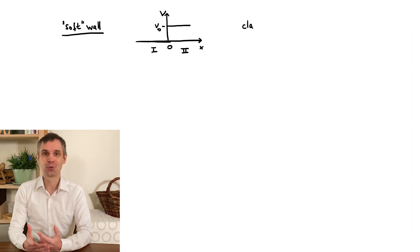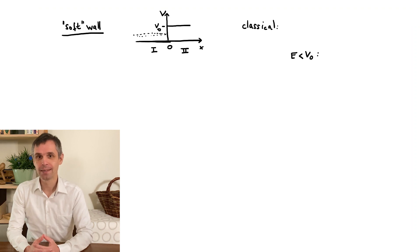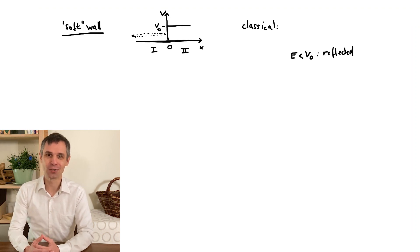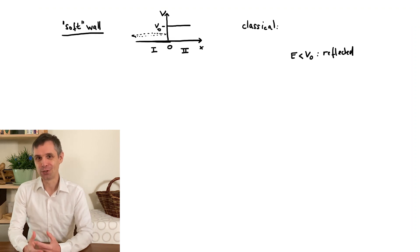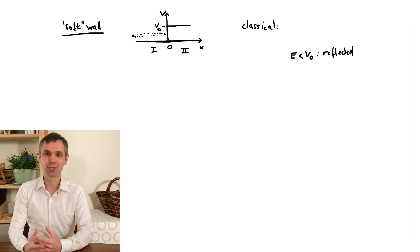Classically, we now have two cases. If the energy is still not enough to overcome this potential energy, the particle will always be reflected. It then really does not matter that the wall has a finite potential energy, it could just as well be infinite. It is actually a little paradoxical that a classical particle does not care how large the potential energy really is in this case.